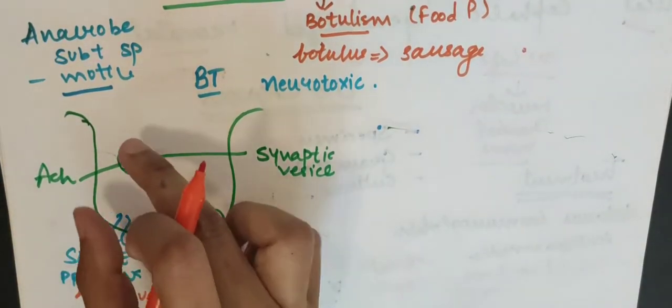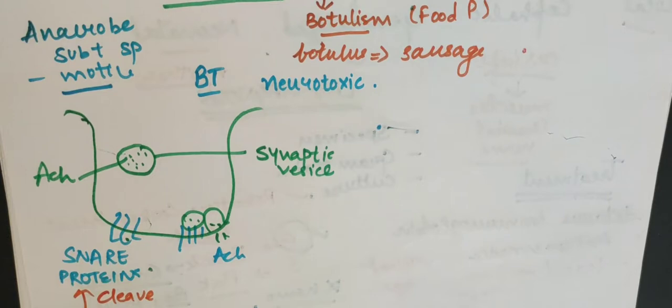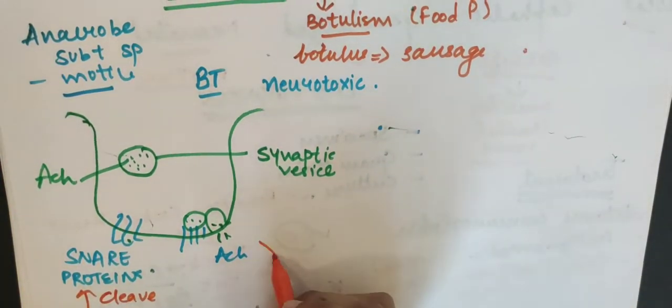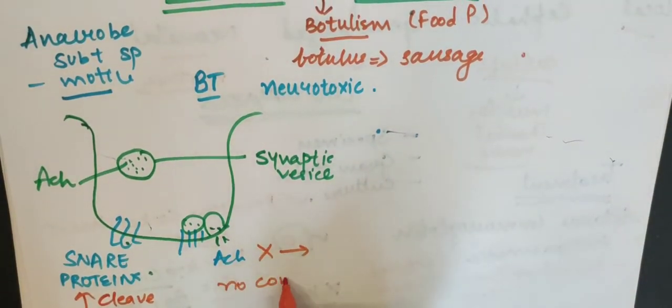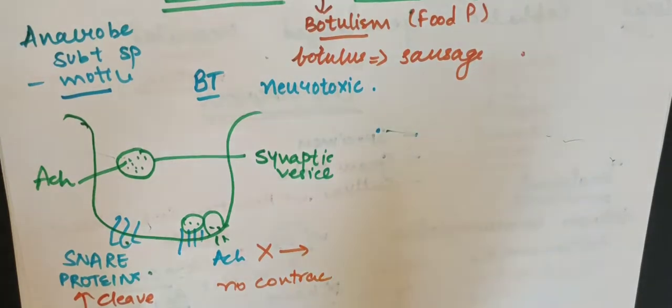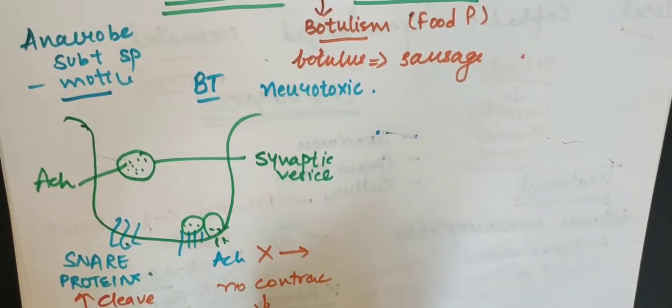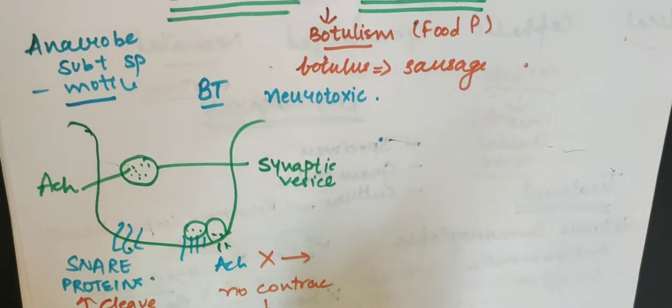If this is cleaved, the vesicle won't be attached, it won't be binding. Acetylcholine is not released. If it's not released, there's no contraction. There's no contraction - it causes paralysis. It will cause paralysis.